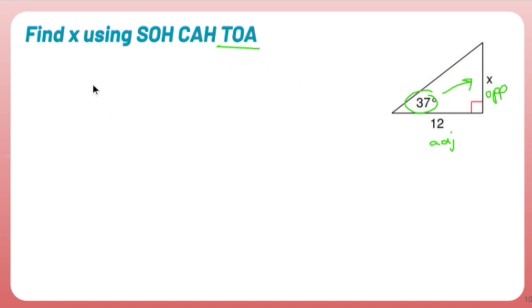So what TOA stands for is tangent of an angle equals the opposite over the adjacent side. Make sure when you do this, your calculator or Desmos is set to degrees. Go to mode or go to that little wrench thing and make sure you're set to degrees.